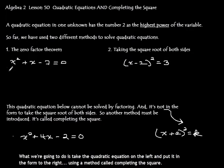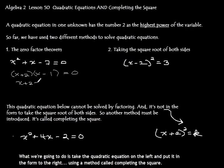The zero factor theorem says that you can factor a quadratic equation — see the highest degree of 2. What we've done is set them equal to 0 and then factor them, and set the factors equal to 0. So we get x plus 2, x minus 1 equals 0. We say x plus 2 equals 0 and x minus 1 equals 0. Then we solve each little equation: x equals negative 2 and x equals 1. That's how we solve them using the zero factor theorem.